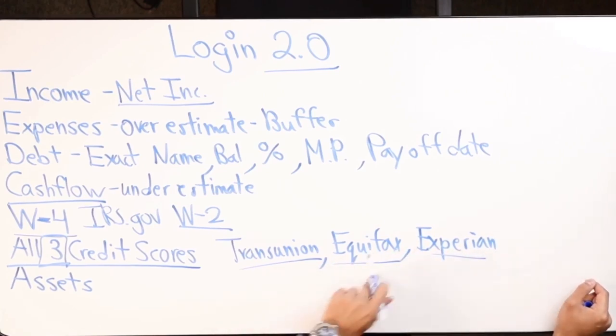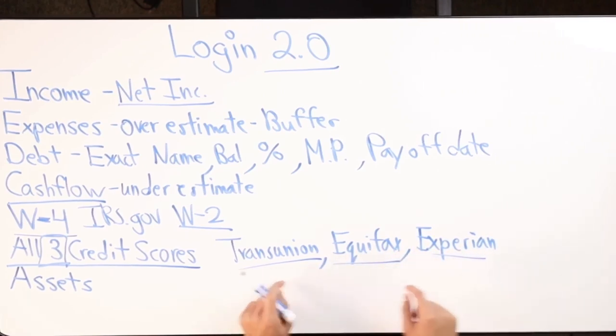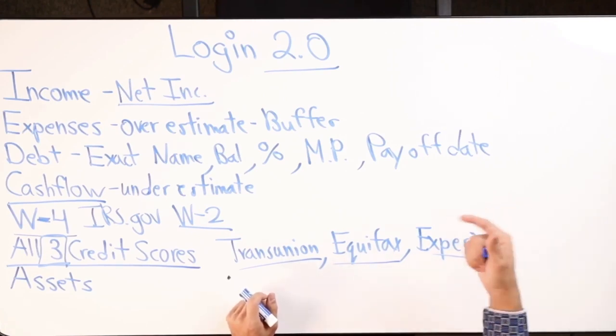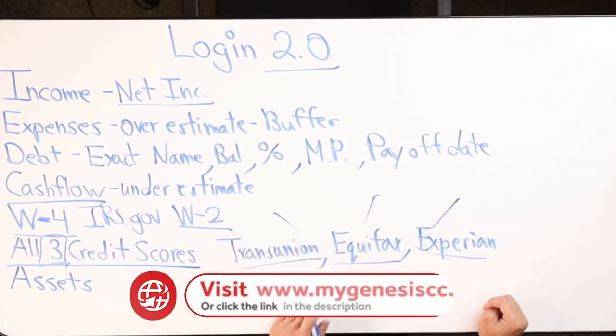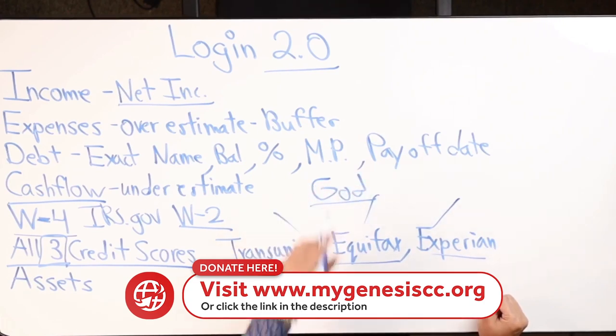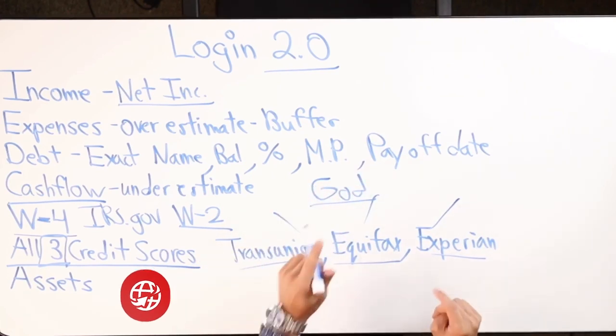Annualcreditreport.com. It's free one time a year and you're going to get all the scores from TransUnion, Equifax and Experian. These are the three major credit bureaus, the three big ones, the big dogs. Unfortunately, you can't go to God for this. Not just yet. Not yet.